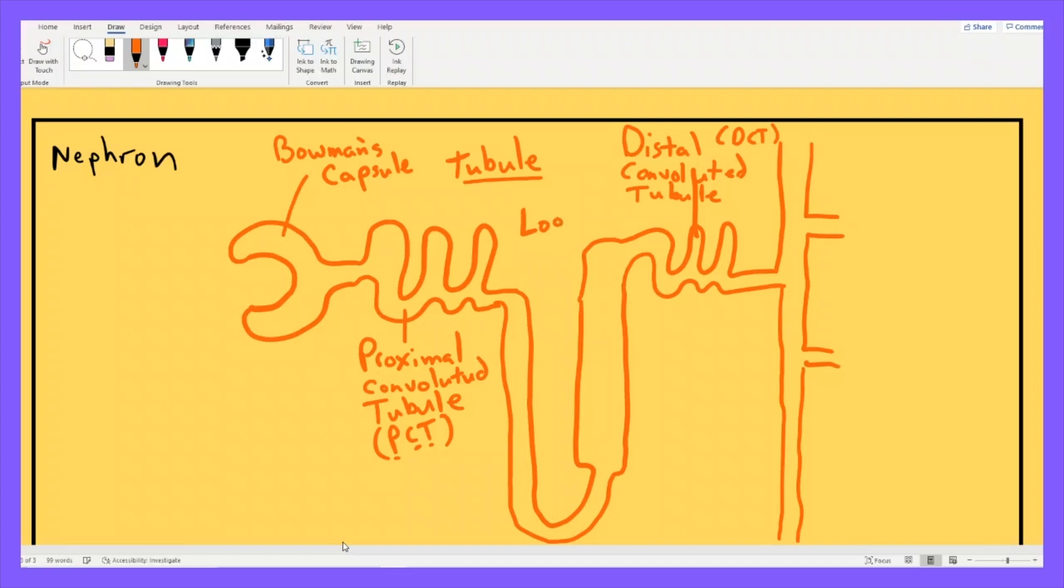And if I have a proximal convoluted tubule, I think logic would only dictate to you that we must also have a distal convoluted tubule. Of course, that's the distal convoluted tubule, or DCT. And what's this big U-turn between them? This thing is called the nephron loop, or loop of Henle. That's this thing. The U-turn is the loop of Henle.